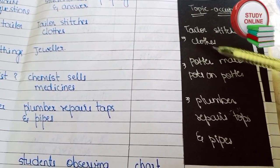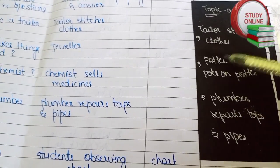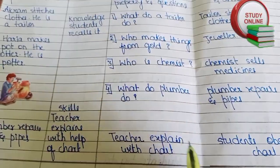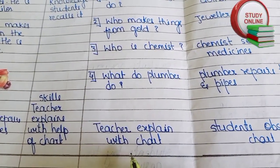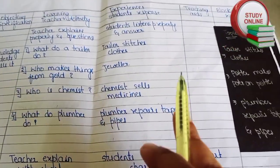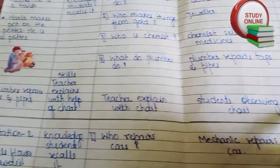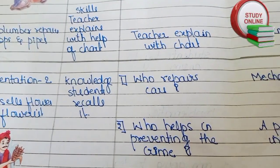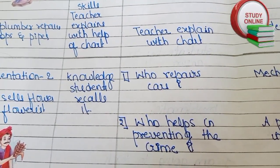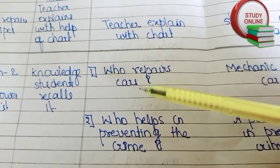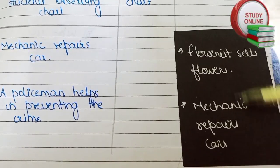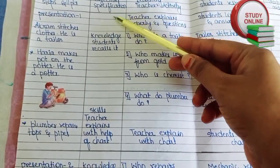This is our blackboard work — we have to write on the blackboard also. After explaining everything, the teacher explains again with the help of a chart, with students observing the chart. For teaching aid, we write 'chart.' Here you can see Presentation 2 — the same process is repeated: explain for five to six minutes, then ask questions like: who repairs cars? Who helps in preventing crime? These are the expected answers, and here is our blackboard work.